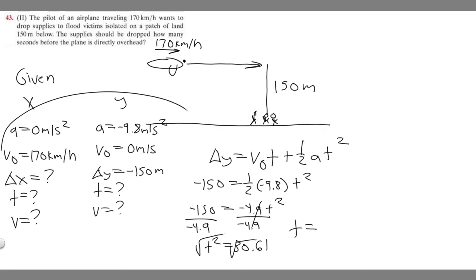If you do that you should get 5.53. I'm going to round to the tenth place, so 5.5. t equals 5.5 seconds. So in order to optimally drop the supplies, how many seconds before the plane is directly overhead should they drop it? They need to drop it about 5.5 seconds before.